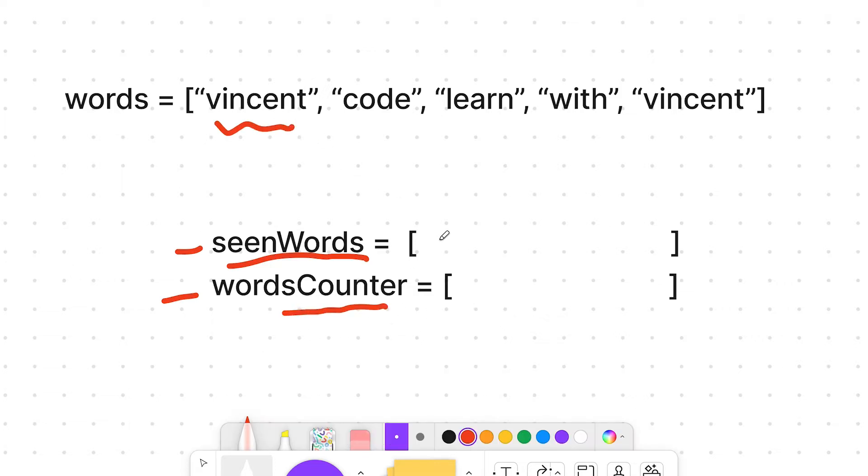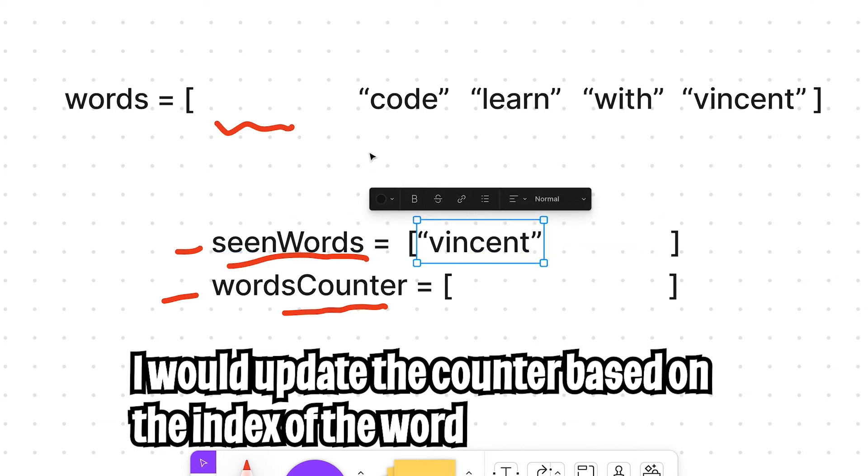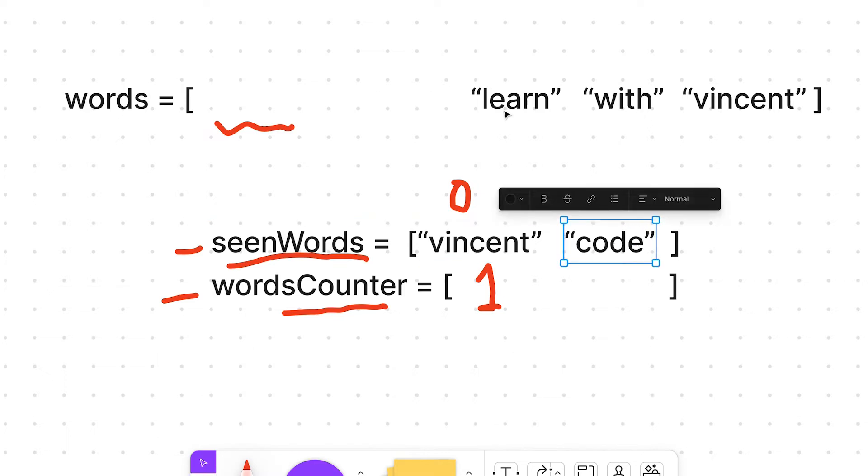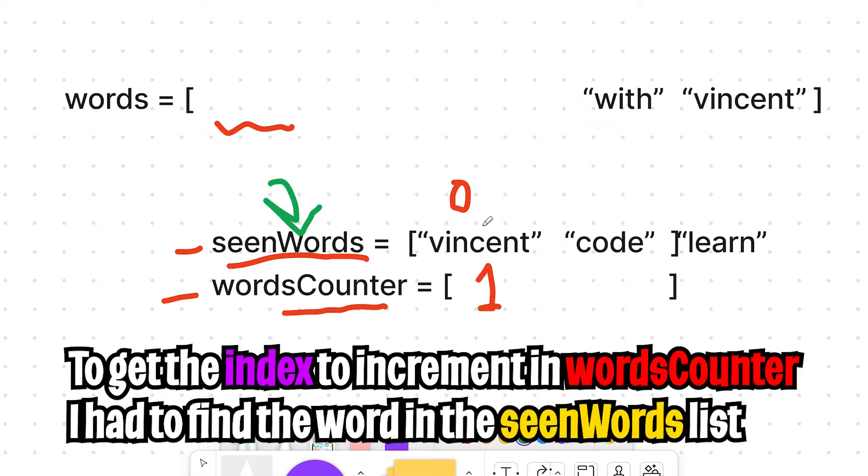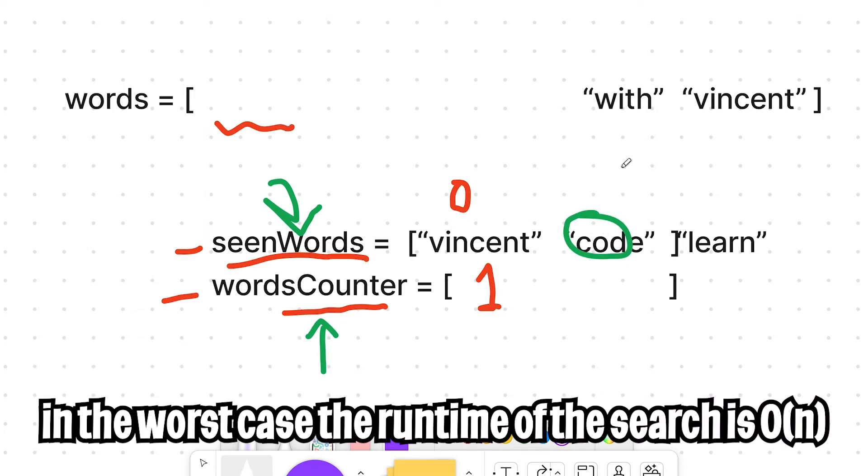One to keep track of the words that I've seen, and also one to keep track of the count. So when I came across a word, I would add it to the seen words list. And then I would get the index and add it to the words counter. So this solution worked.